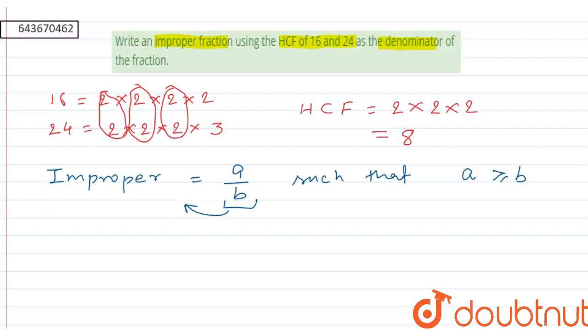Now we are given that the denominator has value equal to HCF. So here b will be equal to 8, and we have to put the value of a such that a is greater than or equal to b. So here it can be 9 upon 8, 10 upon 8, and so on.